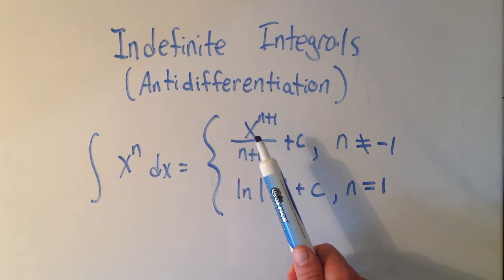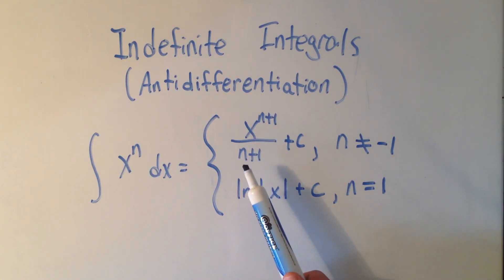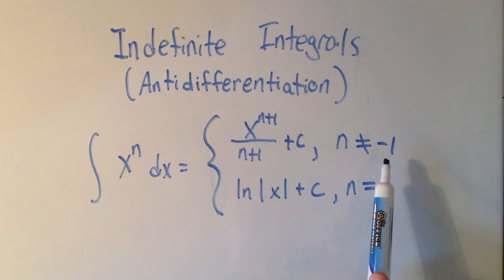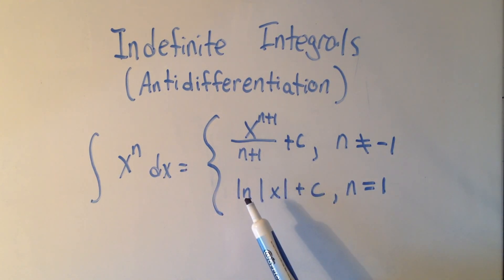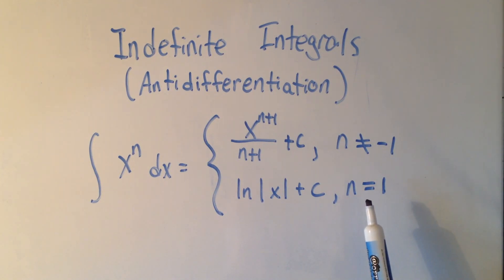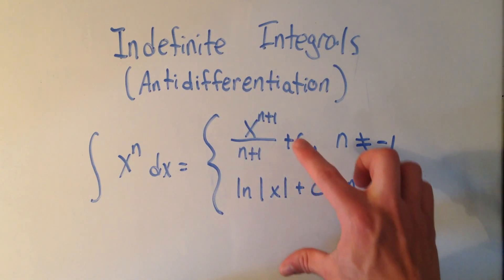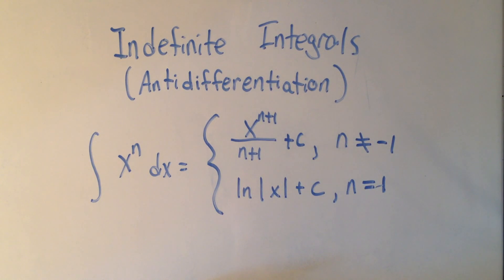That says we add 1 to the power and divide by the new power, if n is not negative 1. Otherwise, this is log of the absolute value of x if n does equal minus 1 — and we're going to talk about why this is later. You'll also notice there's a plus C, and we'll talk about that later too.